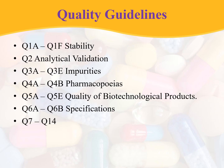In total, there are 14 guidelines in case of quality guidelines, from Q1 to Q14. Q1 is further subcategorized as Q1A to Q1F and mainly focuses on stability. Q2 focuses on analytical method validation. Q3 is subcategorized as Q3A to Q3E and focuses on impurities. Q4A to Q4B focuses on pharmacopoeias, and Q5A to Q5E focuses on quality of biotechnological products. Q6A to Q6B focuses on specifications. From Q7 to Q14 will be discussed at the end of the session.